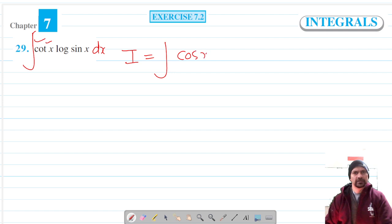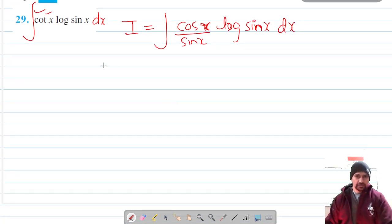Cot x log sin x can be written as (cos x / sin x) log sin x dx. Now let's make a substitution because we know the differentiation of sin x is cos x, so let's substitute sin x = t.